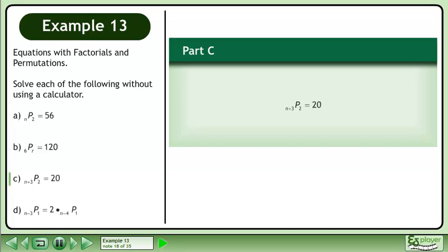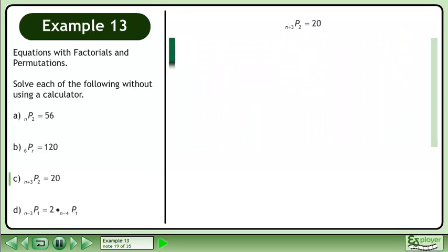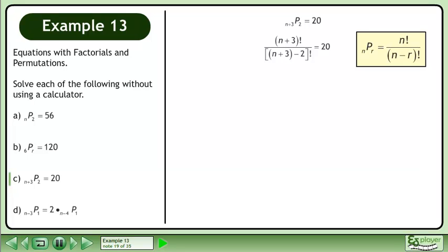In Part C, solve (n+3)P2 equals 20. Write the permutation as a fraction. Simplify.